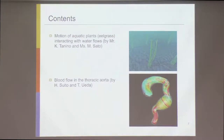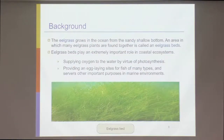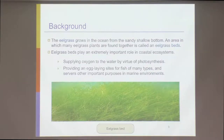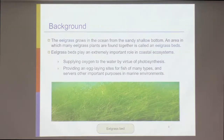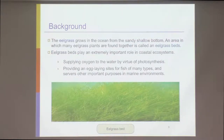So today you saw the immersed boundary method for insects and cars; now you will see plants and blood vessels. The first topic is eel grass — aquatic plants that grow in the ocean from a sandy shallow bottom. Areas where many eel grass plants are found together are called eel grass beds. Two important eel grass bed sites exist in Japan: the Seto Inland Sea and the Sanriku shore, which was badly damaged six years ago but is now recovering. Eel grass beds play a very important role in coastal ecosystems.